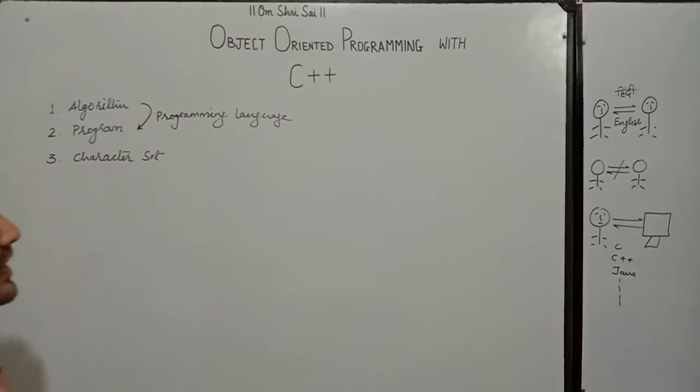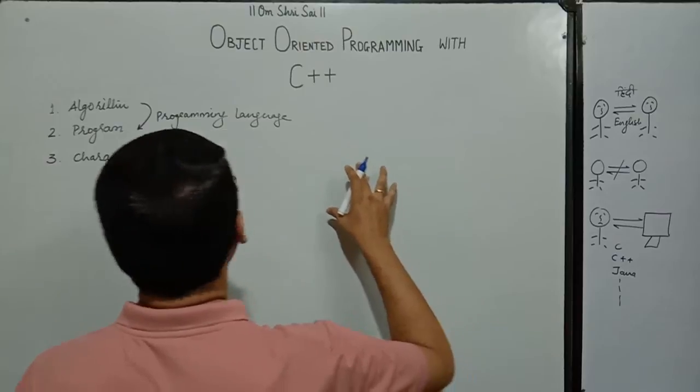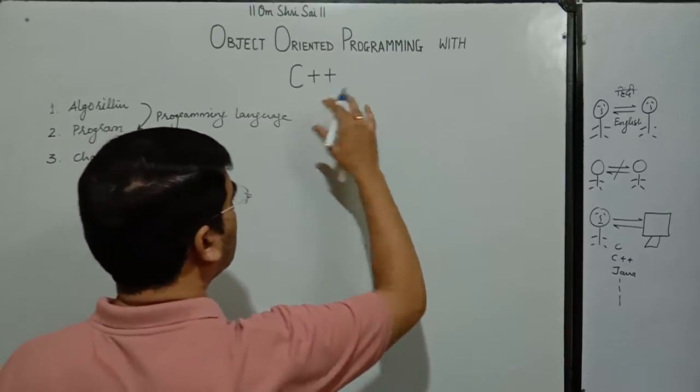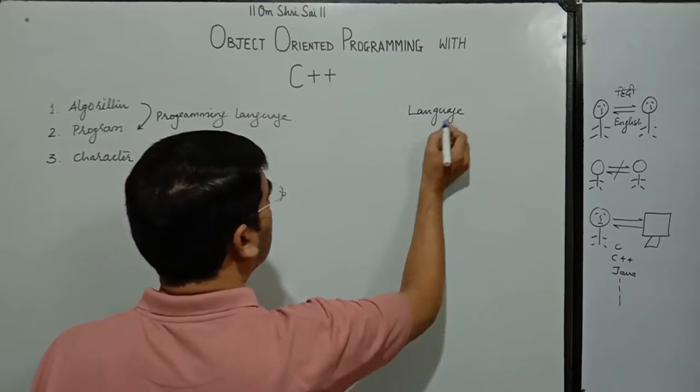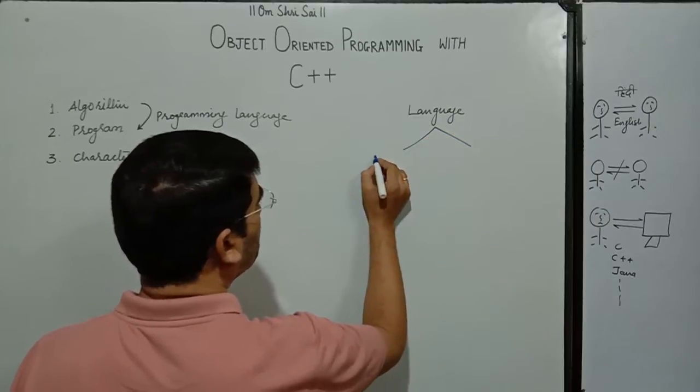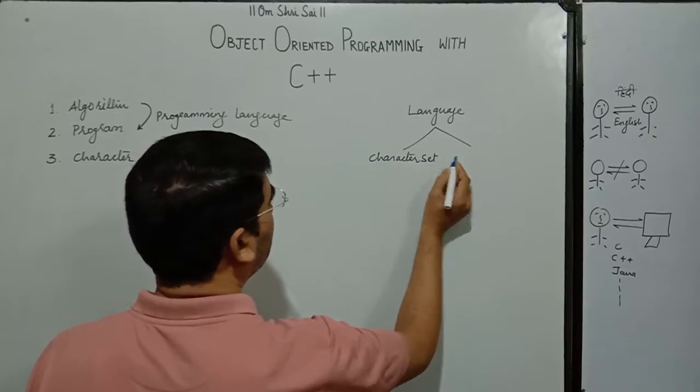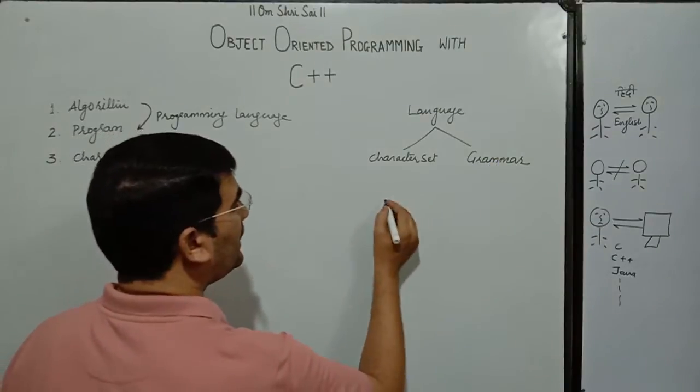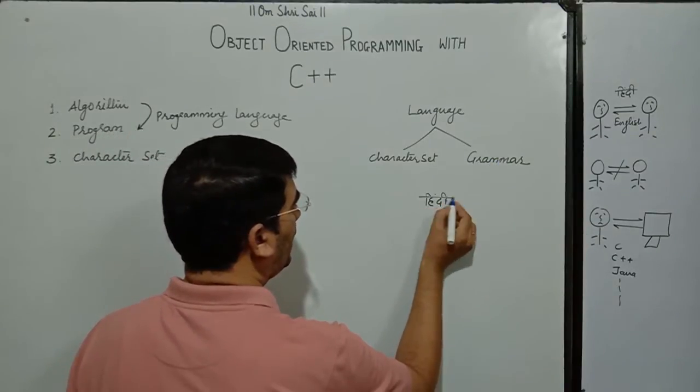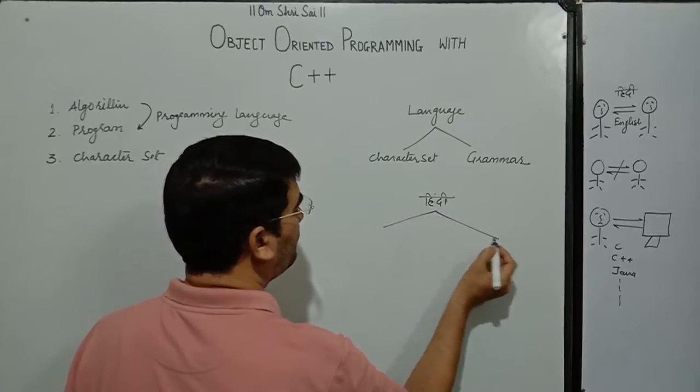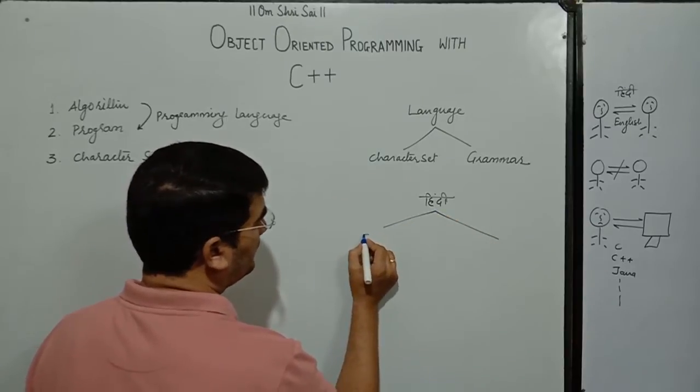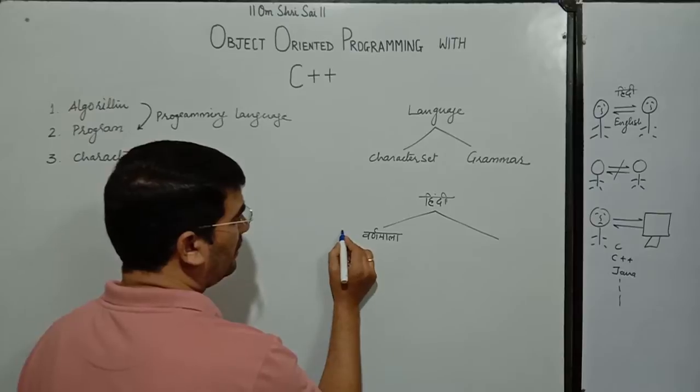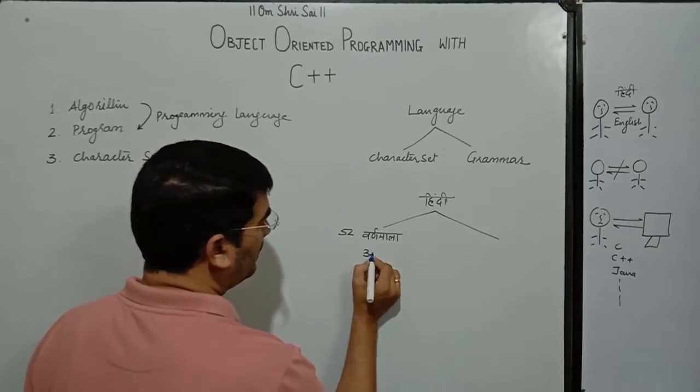Now, for this we will be having an analogy. As we have termed C++ as a language, any language, there will be two things. One is the character set of that specific language and another is grammar. Now, if we talk about the languages like Hindi, we are having the character set.